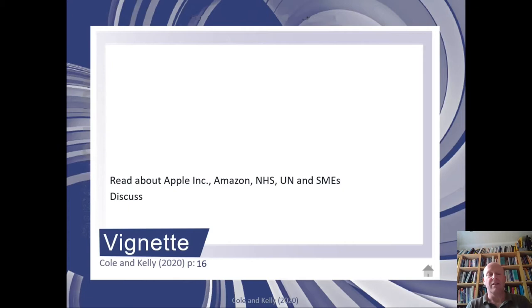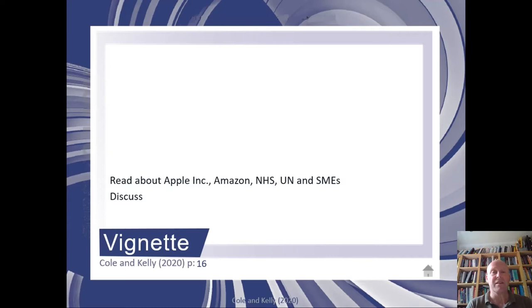The vignette on page 17 looks at several different types of organisation — some you may be familiar with, like Apple, Amazon, the NHS if you're in the UK, the UN, and small and medium enterprises. It should help you understand how companies vary in size from giants with millions of employees right down to organisations with only one or two. We can look at organisations that make trillions of dollars compared with those that make a relatively small amount, or indeed don't have profit as their goal at all and are concerned with providing a public service.